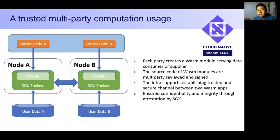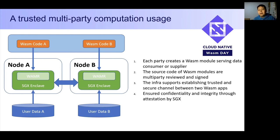The last use case is using WASM on SGX for multi-party computation. In this use case, each party develops a WASM application that can be a data consumer, a data supplier, or both. All parties review the source code of the WebAssembly applications and sign the binary modules. A base infrastructure loads the WASM modules into an SGX enclave and establishes secure, trustworthy channels between the WASM modules, allowing multiple parties to share data for computation safely.